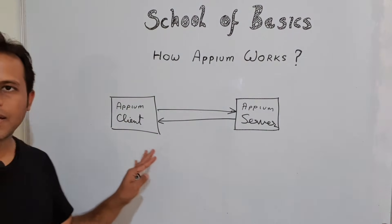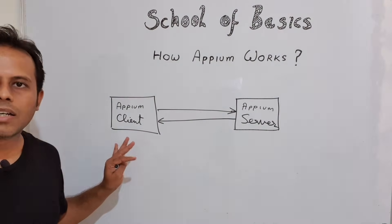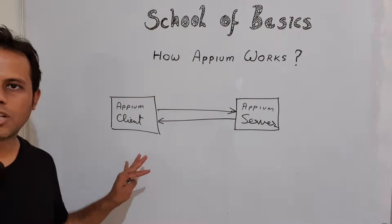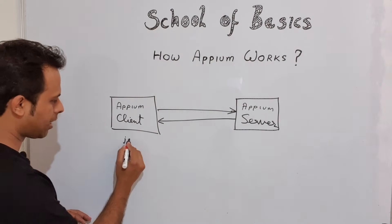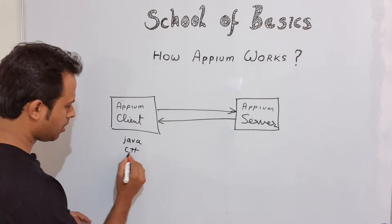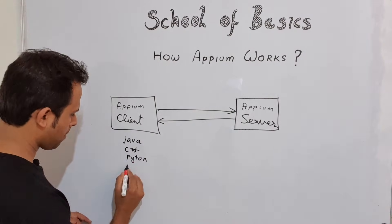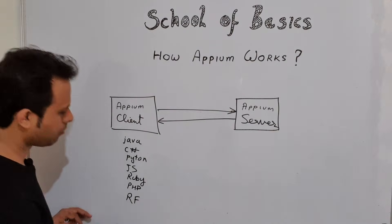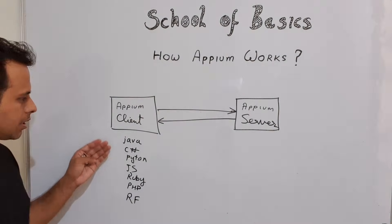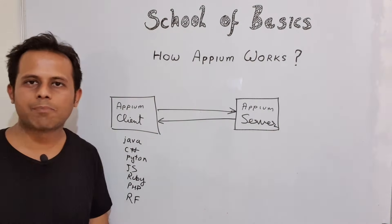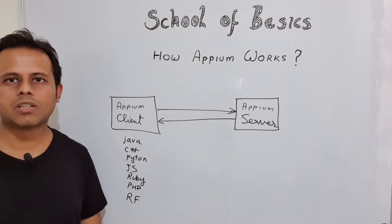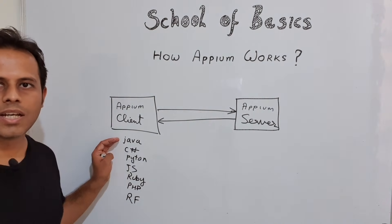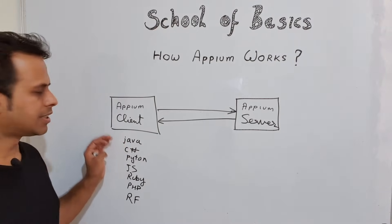What is an Appium client exactly? Appium clients are actually the Appium client libraries that you can find on the Appium official documentation page. These libraries are available in different programming languages like Java, C-Sharp, Python, JavaScript, Ruby, PHP, and Robot Framework. You can create your framework using any of these client libraries. For example, if you want to create an automation framework in Java, you would download the Java client libraries and add them to your project.